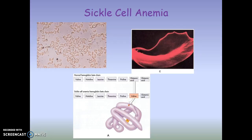Interestingly, sickle cell anemia actually makes people resistant to malaria. The organism Plasmodium infects red blood cells, but the sickle cell shape prevents Plasmodium from entering the red blood cell, thus making a person with sickle cell anemia resistant to malaria. While sickle cell anemia can cause severe complications, it is protective against malaria. This explains why there is a high incidence of both malaria and sickle cell anemia on the continent of Africa.